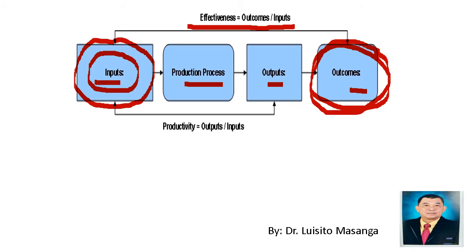Effectiveness is defined as outcomes over the inputs. While productivity can be shown from these three variables of how effective or how productive you process your inputs to output. And productivity, as we all know, is outputs over inputs.